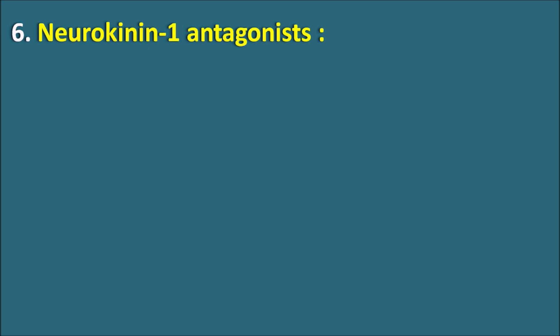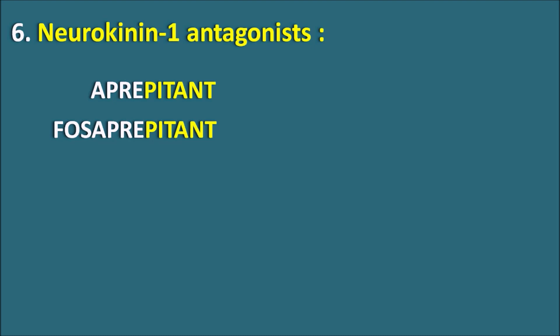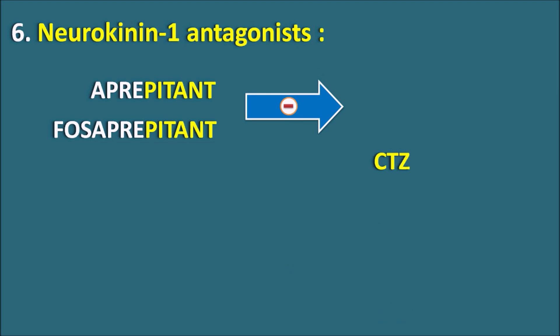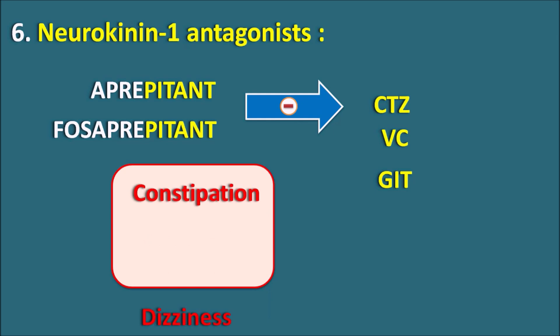The sixth class is the neurokinin-1 antagonists. Two drugs are aprepitant and fosaprepitant, with fosaprepitant being a phosphorus derivative of aprepitant. These drugs block neurokinin-1 receptors, thereby inhibiting activation of the CTZ, vomiting center, and GI tract. They can be used in the treatment of chemotherapy-induced and post-operative nausea and vomiting. Side effects include constipation, dizziness, fatigue, and sometimes diarrhea.